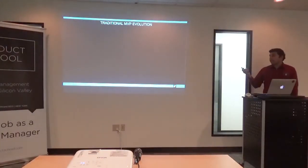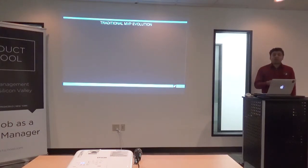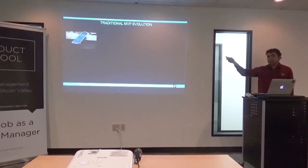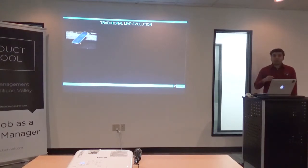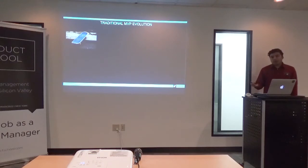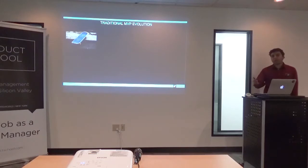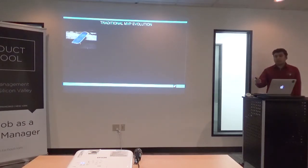The traditional MVP evolution works this way. Say you were the product manager at Harley Davidson. You wrote a requirement that you want to get from point A to point B. The very first iteration would look like this skateboard. This skateboard can get you from point A to point B. But your product requirement might not have potent requirements such as needing to get there at 30 miles per hour.